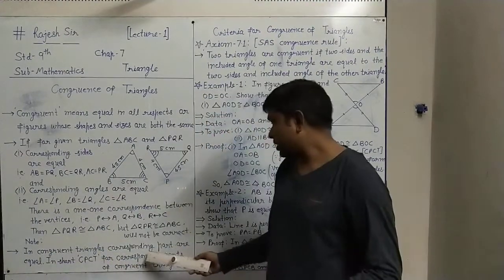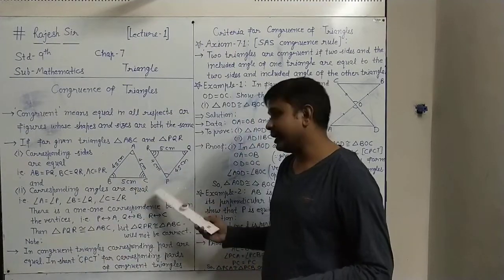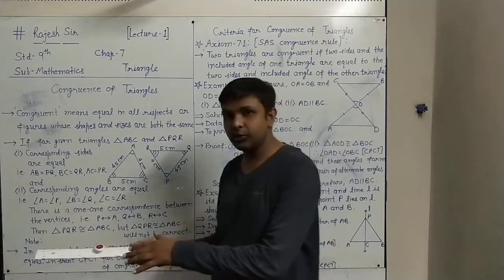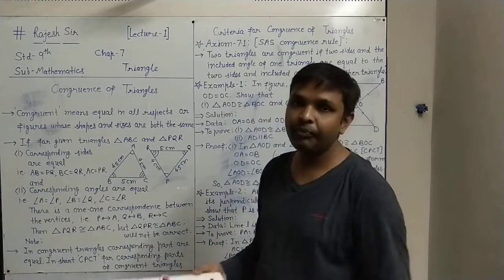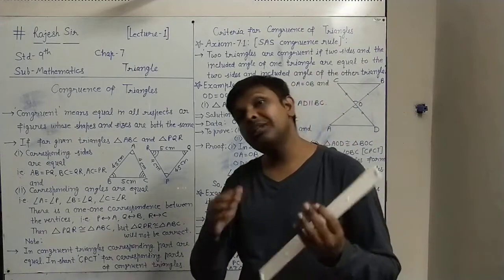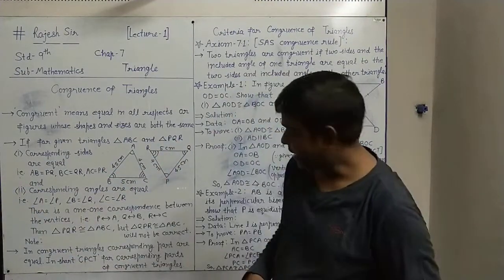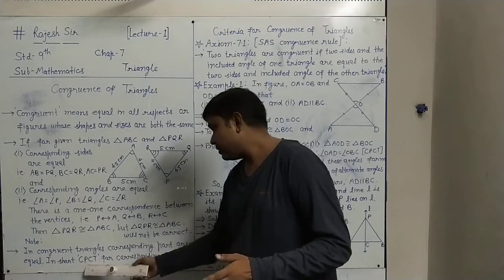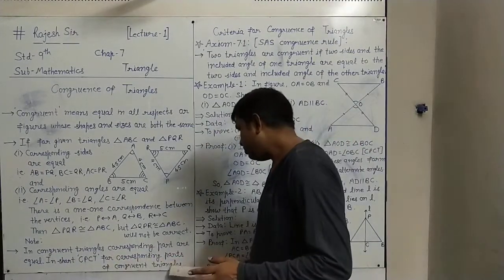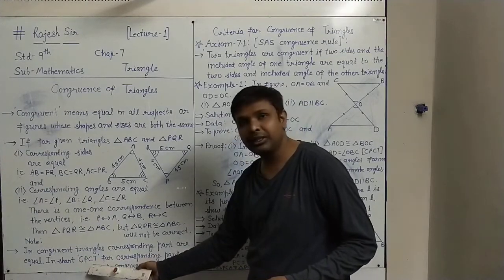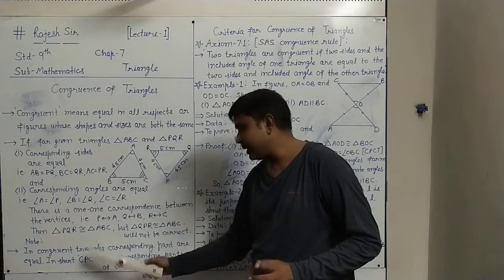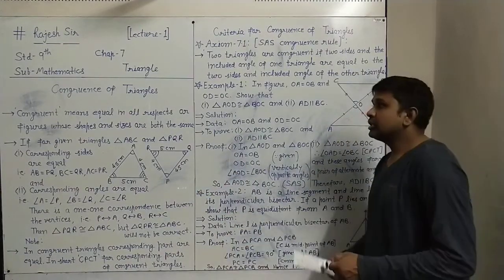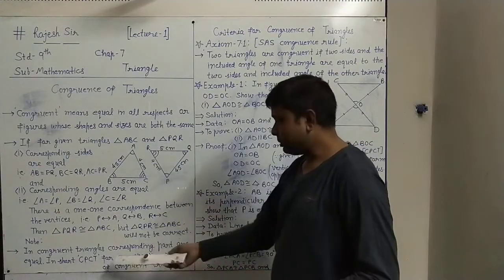In congruent triangles, corresponding parts are equal — meaning all three sides of the first triangle are equal to the corresponding three sides of the other triangle, and all three angles of the first triangle are equal to the corresponding angles of the other triangle. In short, we write CPCT for 'Corresponding Parts of Congruent Triangles.' Whenever we write CPCT, it means corresponding parts of congruent triangles, and for two given congruent triangles this will always be true.